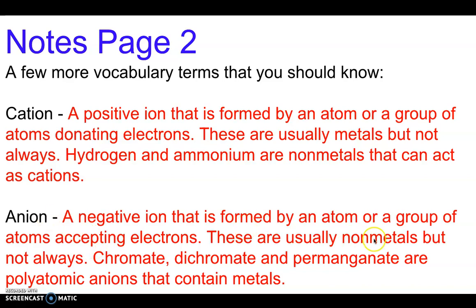Anions are usually non-metals but not always. Chromate, dichromate, and permanganate are all polyatomic anions that contain metals in them. Some anions can have metals in them but usually they're going to be non-metals.